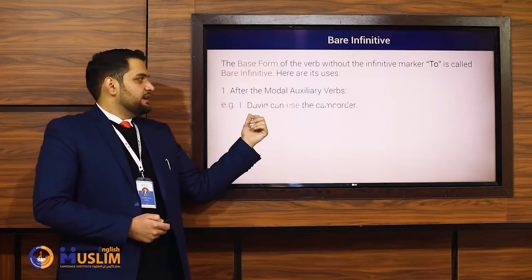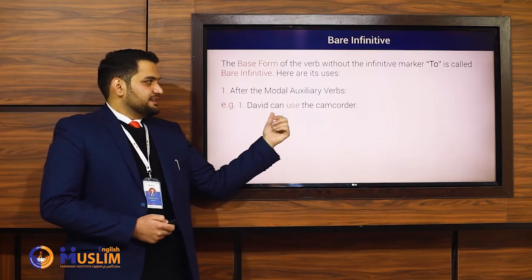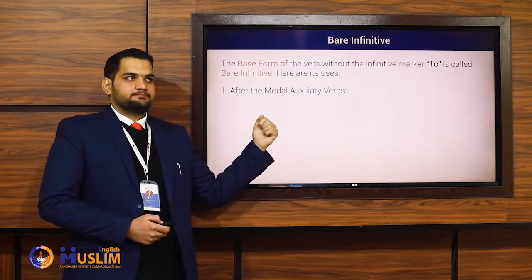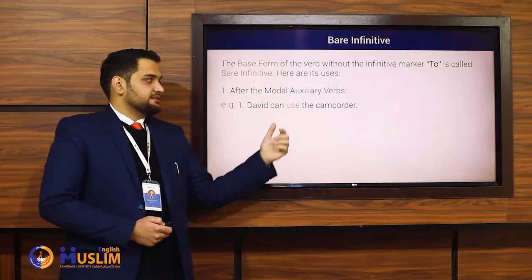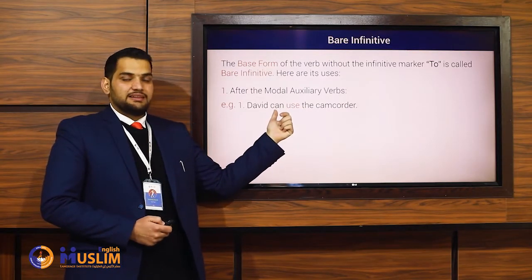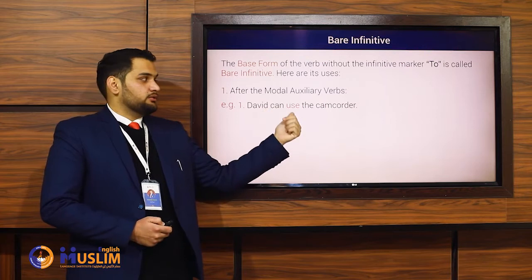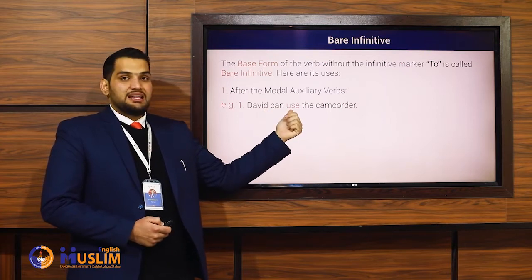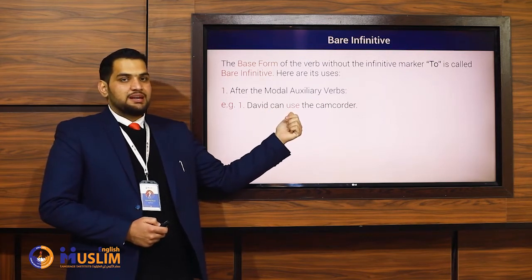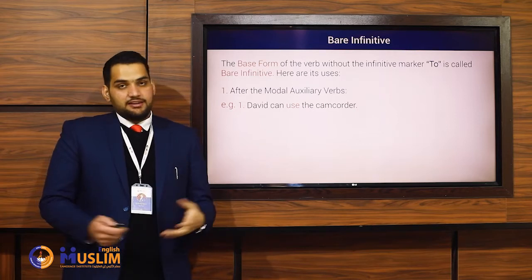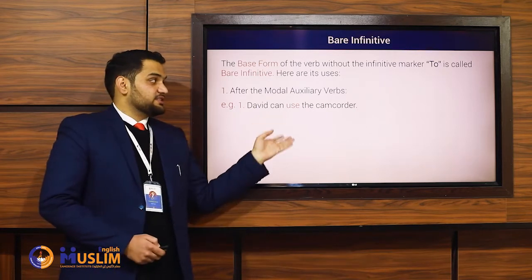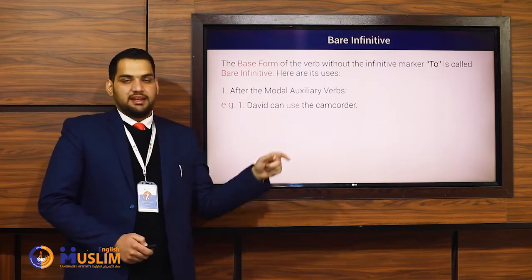For example: 'David can use the camcorder.' In this sentence, we've got a modal and that is 'can.' After the modal, we have the base form of the verb 'use.' This is known as bare infinitive. And you cannot say 'David can to use' — that's wrong.